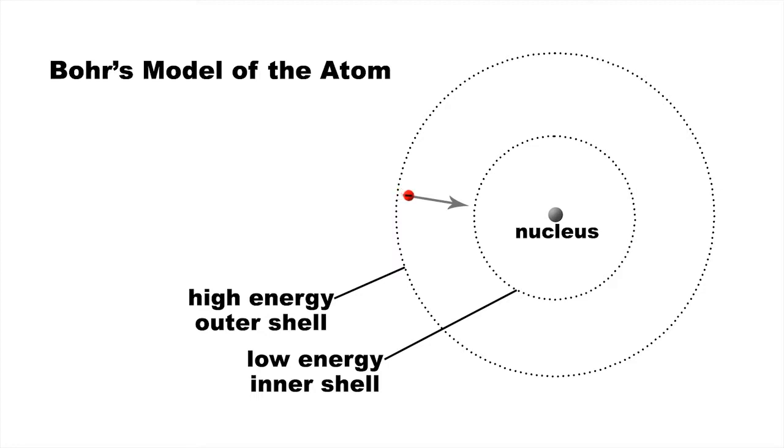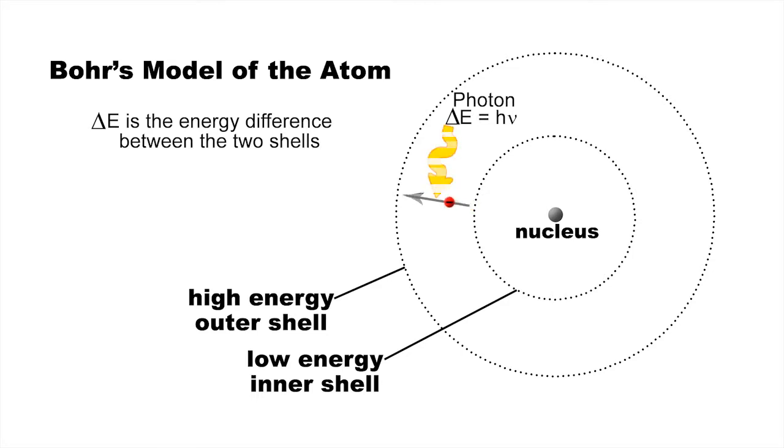When an electron moves from a high-energy outer shell to a low-energy inner shell, it will emit a photon of light whose frequency corresponds to the energy difference between the two shells. And it can go back the other way by absorbing the same frequency of light.